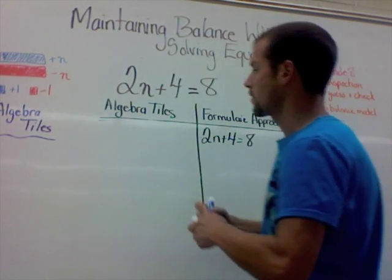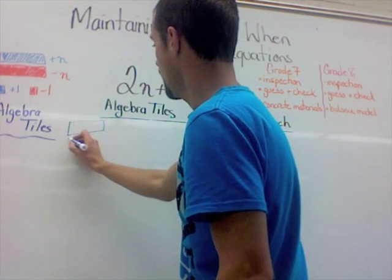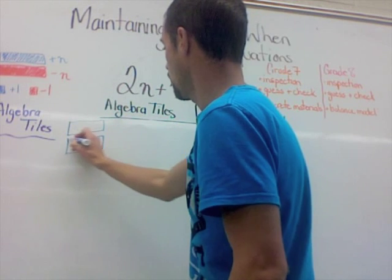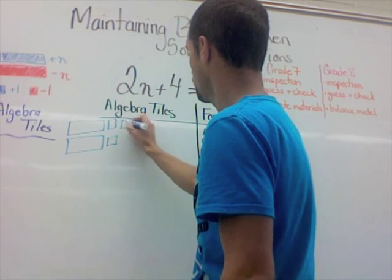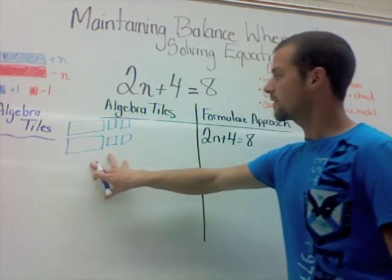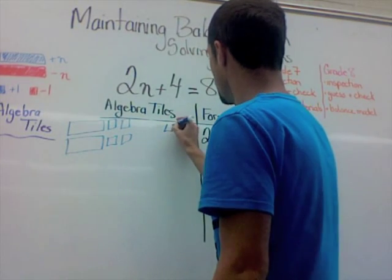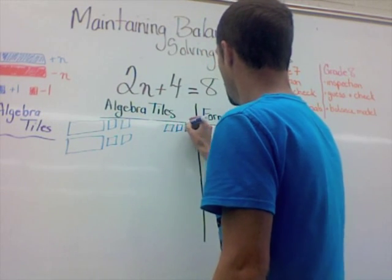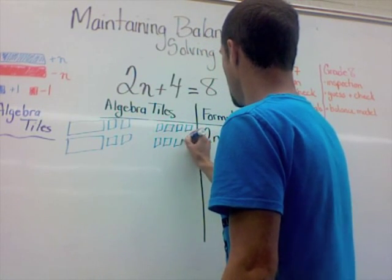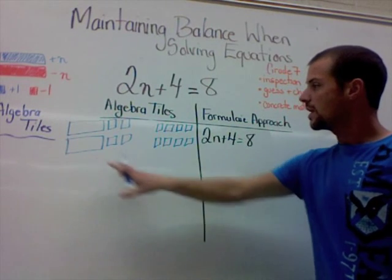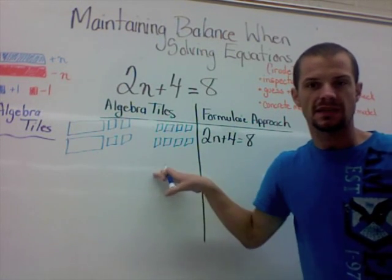So let's draw that out first. The first thing we want to do is start with our algebra tile rods. Then we want to add our four units, our four ones. That's one side of the equation. Over here, I'm going to draw the other side of the equation, which is going to be our 8. So there you go: 2n plus 4 equals 8. We're balanced. They mean the same thing.